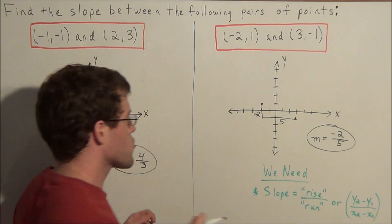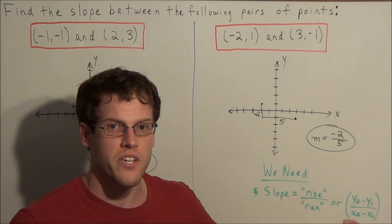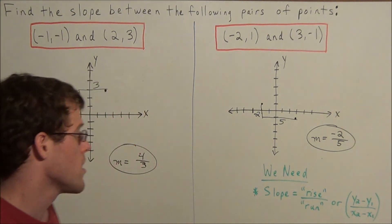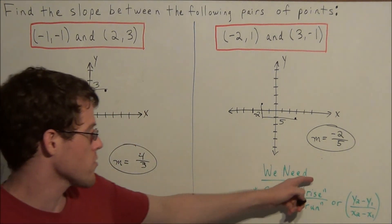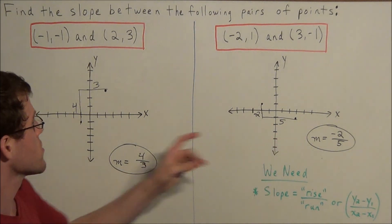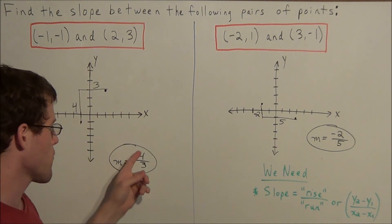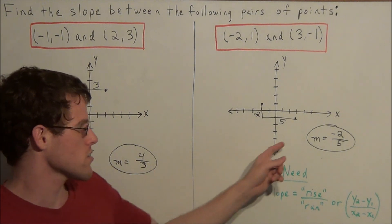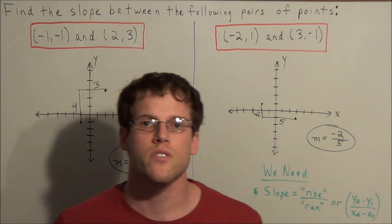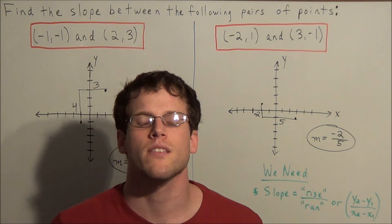This graphical approach to finding slope is definitely somewhat simpler than using the equation, and it uses more of the concept of slope — finding the rise over run. These would be our two answers: finding the slope between the following pairs of points, we have a slope of four thirds and a slope of negative two fifths. This is going to conclude this slope video. Thank you all for watching, and I hope that this was helpful.